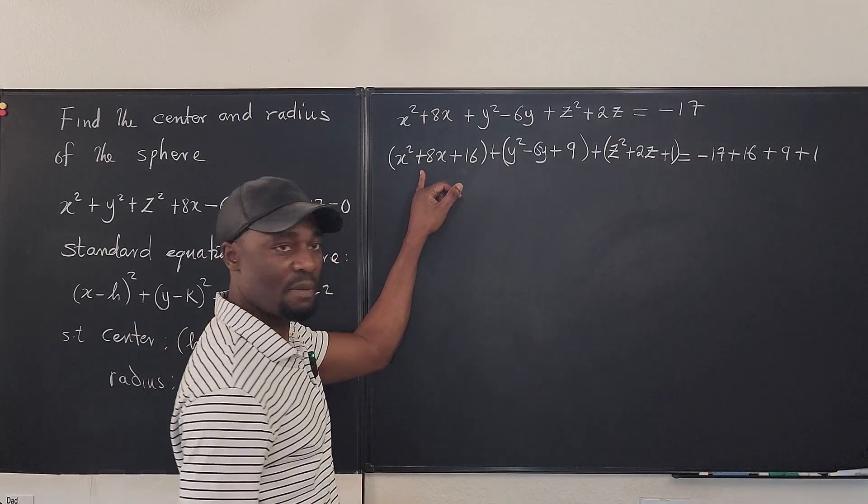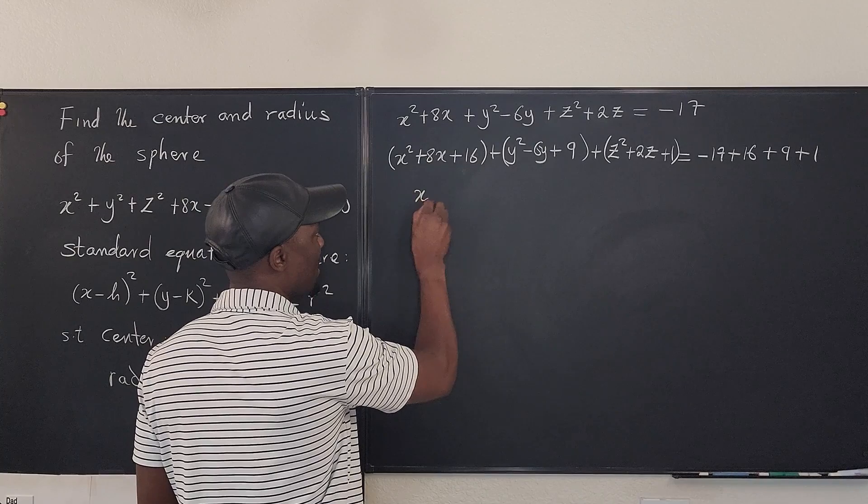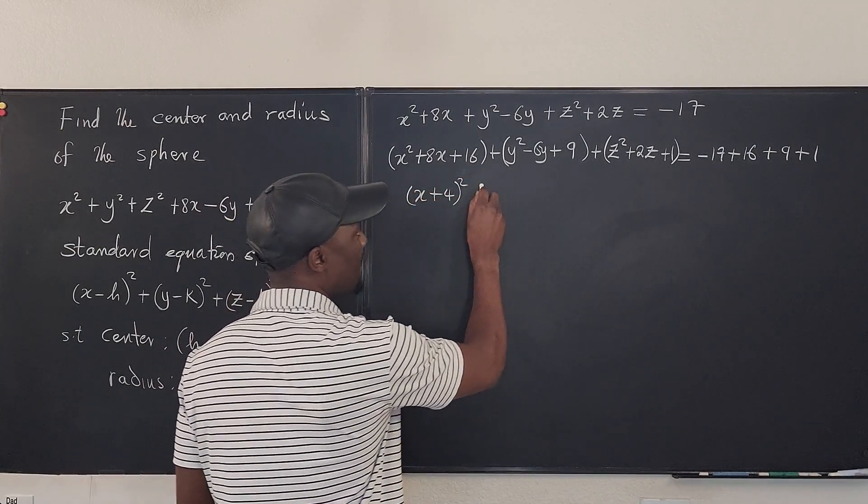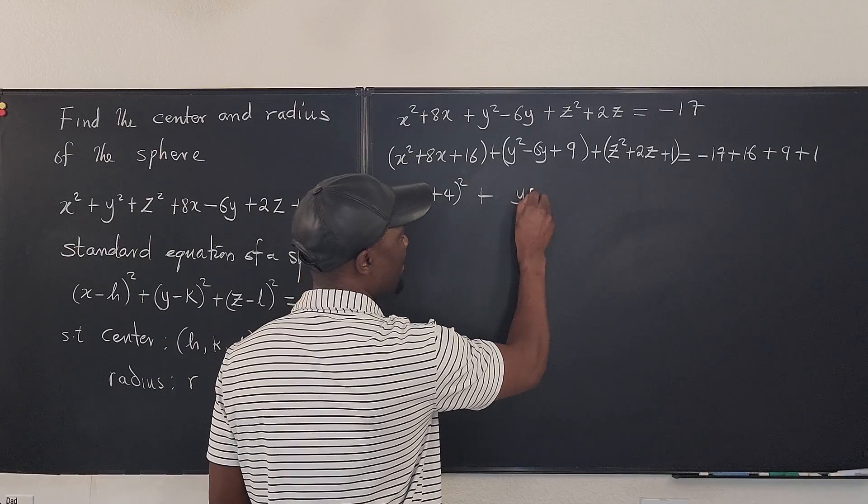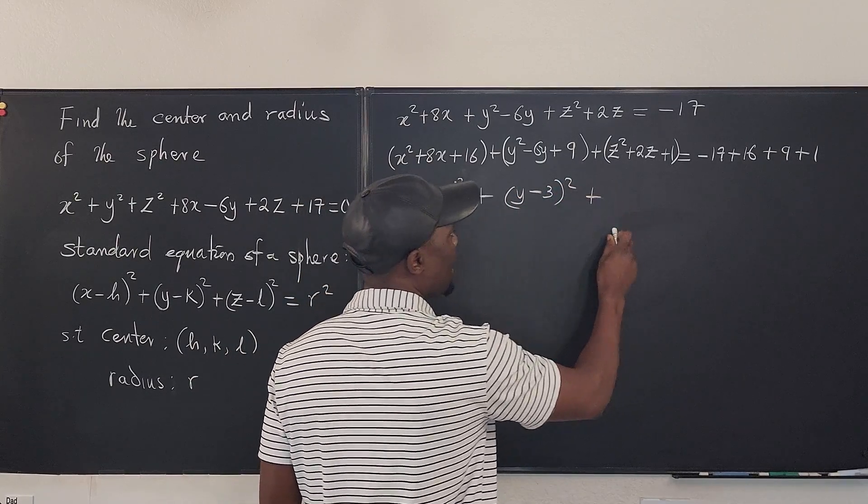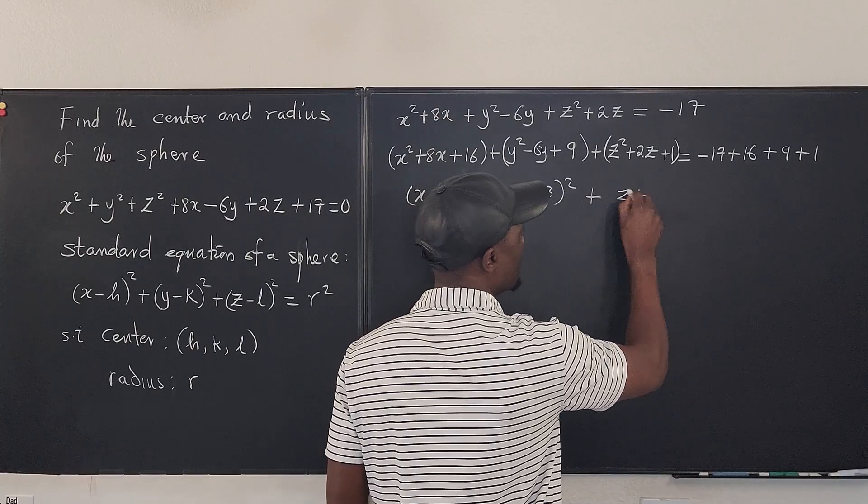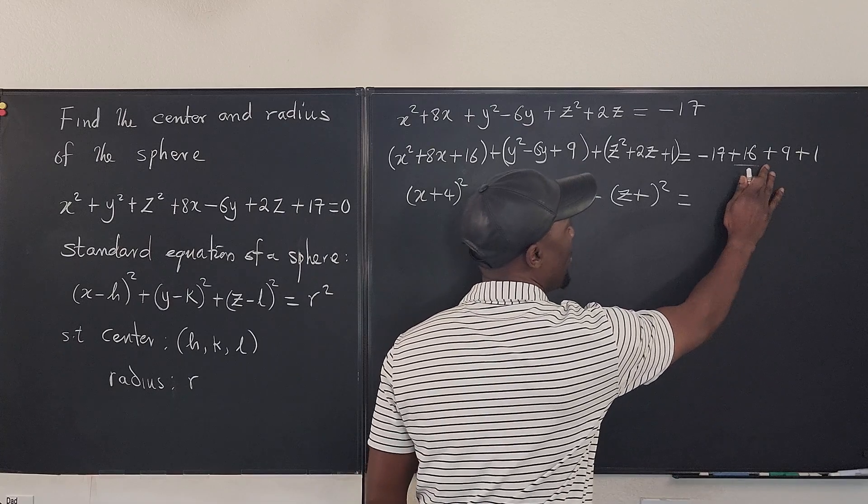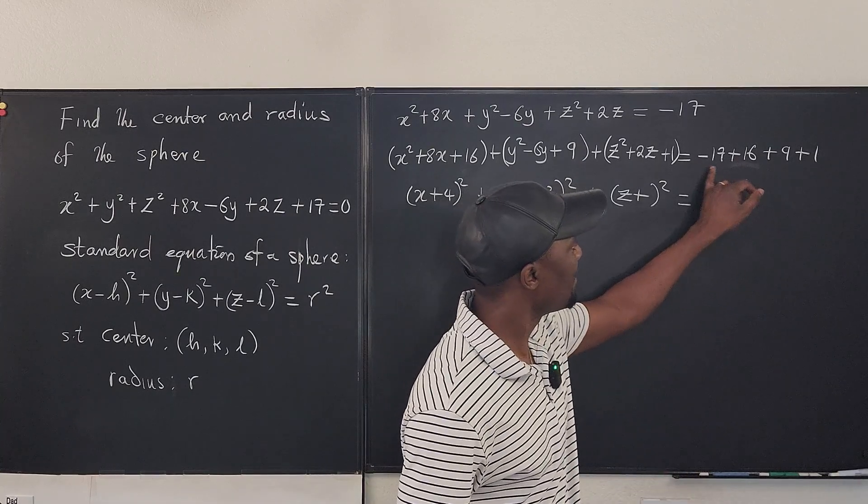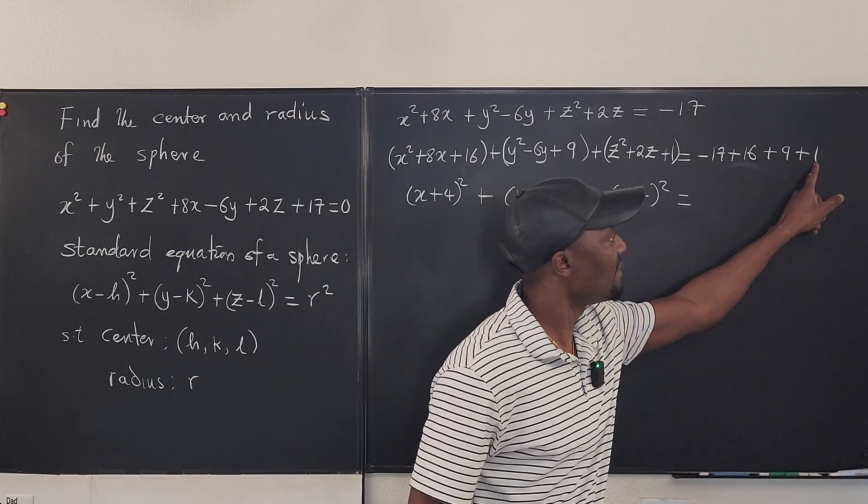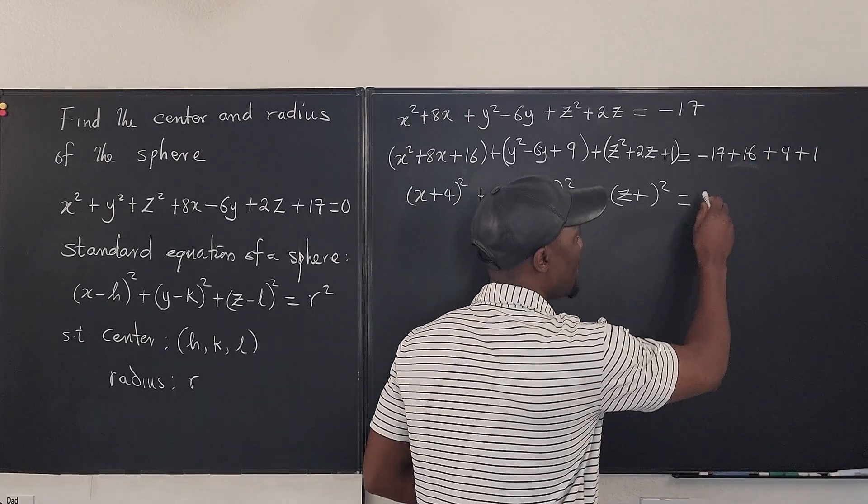Clearly, this is a perfect square. It is a perfect square (x + 4)². Clearly, this is a perfect square (y - 3)². Clearly, this is (z + 1)². And if we add up all the terms here, it's just 9 because negative 17 plus 17 is 0 plus 9. So it's just 9.